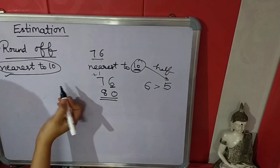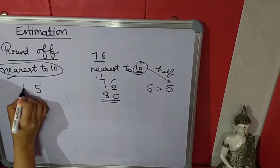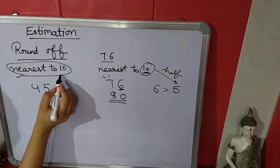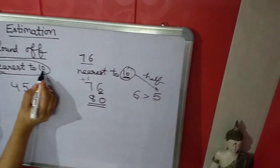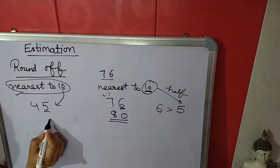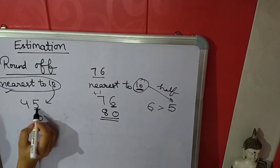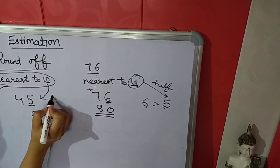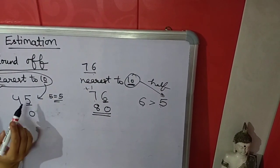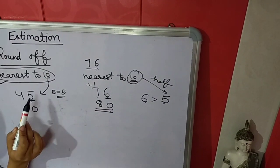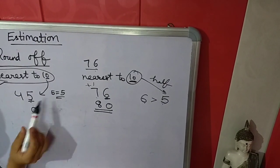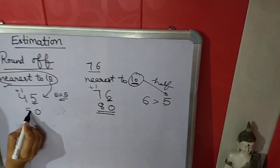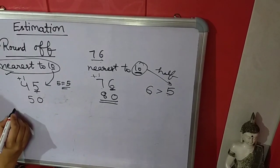Let us take another example: 45. We have to estimate it nearest to 10. In 10 there is 1 zero, so the last number will become 0. Now we compare this digit to 5. Since 5 is equal to 5, we add 1 in the next number: 4 plus 1 equals 5, so the answer is 50.